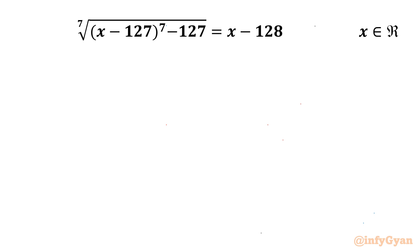Welcome back to Infigyan, my dear friends. In this video we have one very interesting and challenging question from Radical Equations. The given equation is the 7th root of (x minus 127) whole power 7, minus 127, equal to x minus 128.